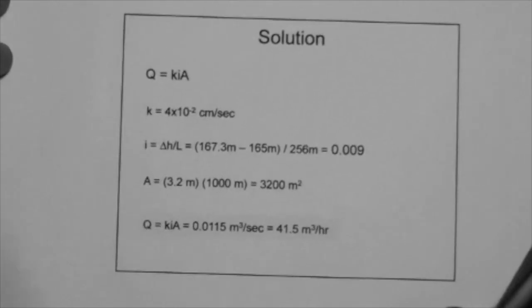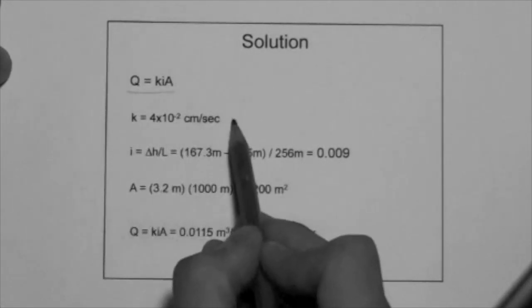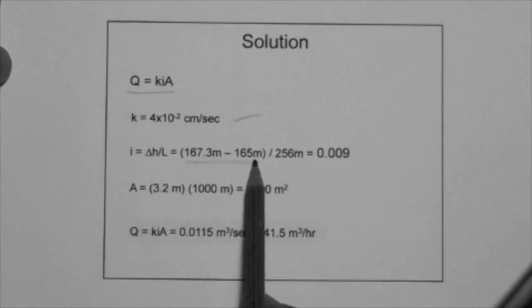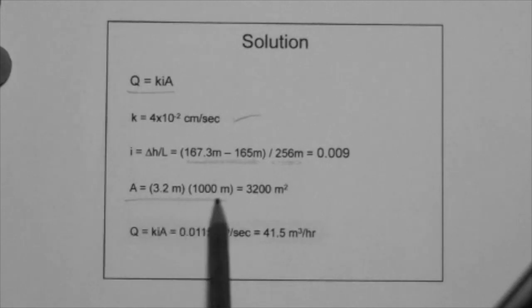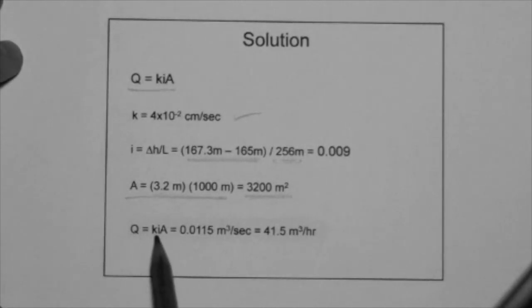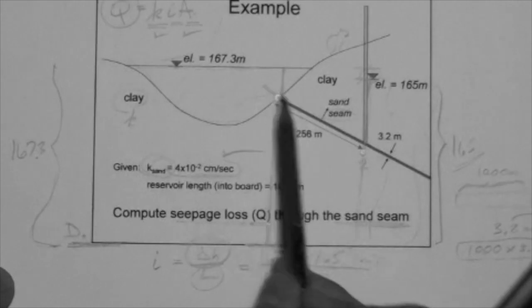So, here's the formal solution in a more organized way. Q is equal to KIA. K is given. I is delta H over L. We already know how to get these two numbers. That's between points one and two. The distance between them is 256. The area is 3.2 meters times 1,000 meters. And then we use the KIA, Q equals KIA equation, to determine the seepage loss or the flow rate. 0.015 meters cubed are lost of water every second through this seam.